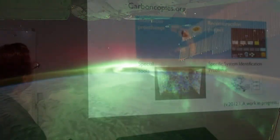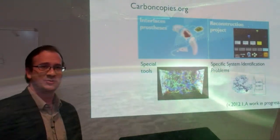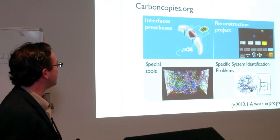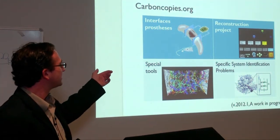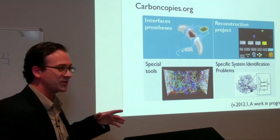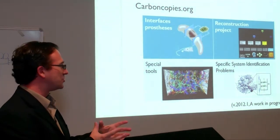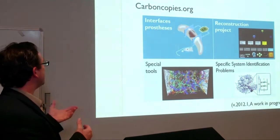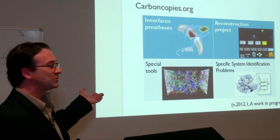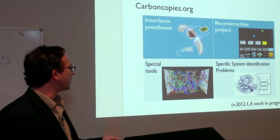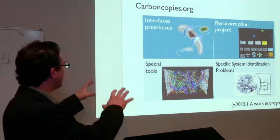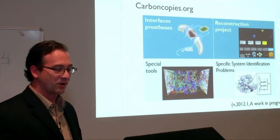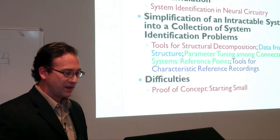This talk is about system identification, something done in many areas of science. In this particular case, we're interested in interfaces for prosthetics and reconstruction of larger neural systems — taking a piece of neural tissue and reconstructing what's going on in there. Special tools are needed to make that possible, and there are specific problems in system identification that arise.